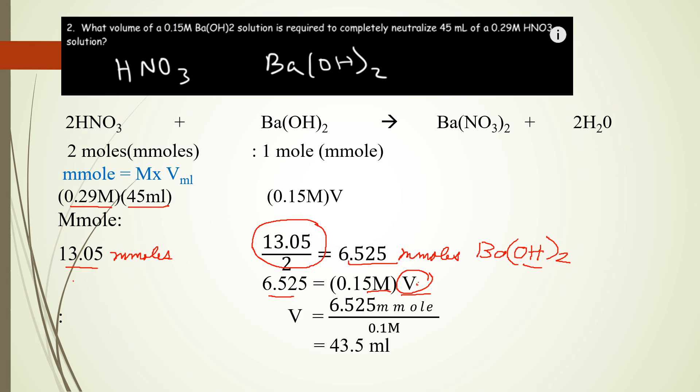So if I compute for V, 6.525 millimoles over 0.15 molar. Remember, molar can be expressed in terms of millimoles per ml. Remember, when it is a fraction in the denominator, the ml goes up. And the millimoles will cancel out, and the remaining unit will be in ml. So it's 43.5 milliliter.